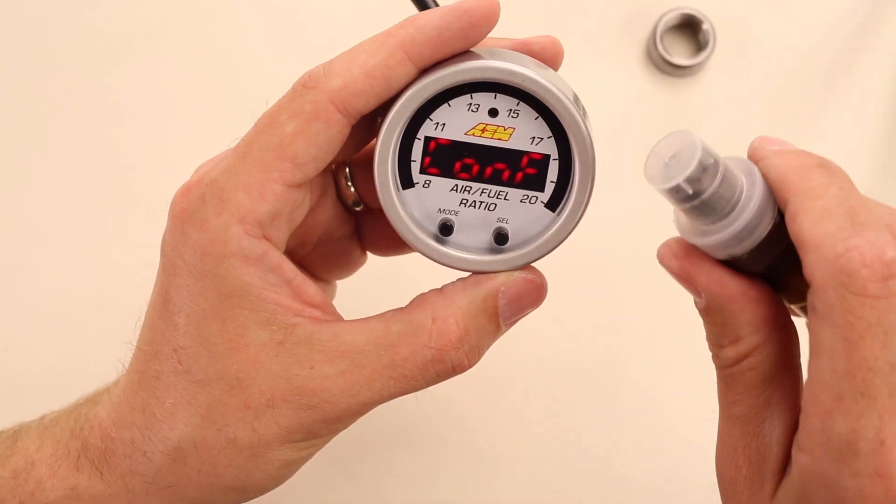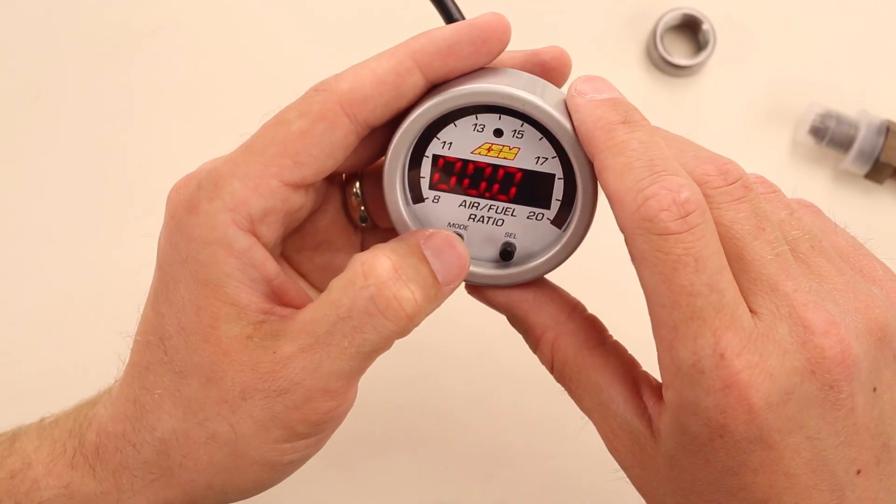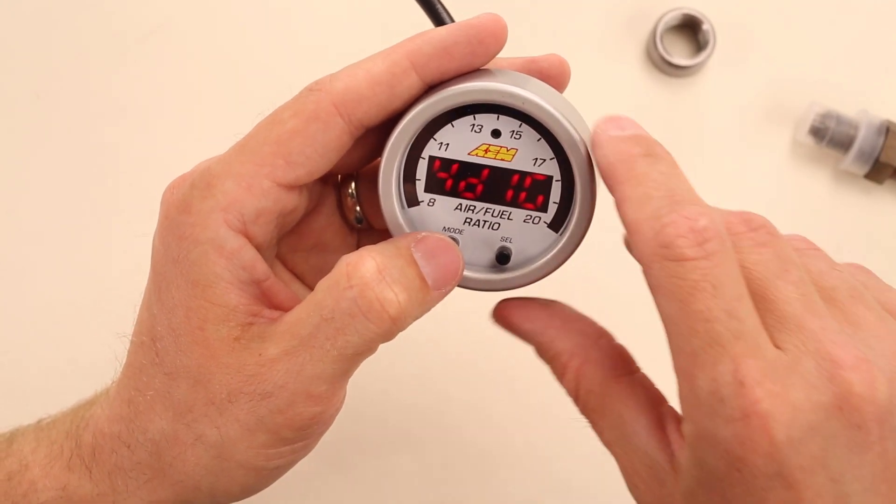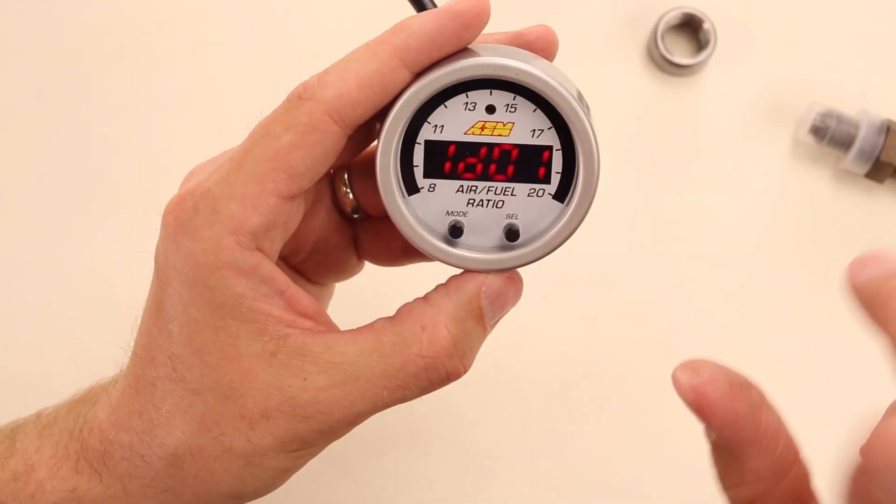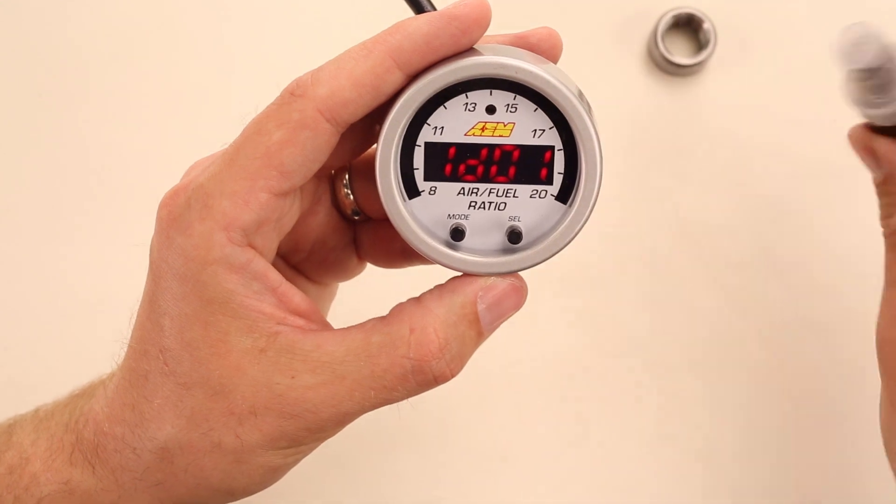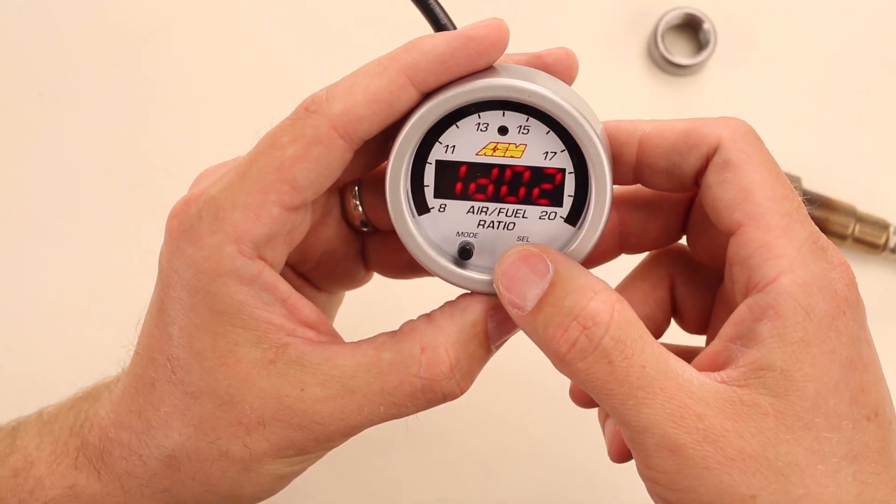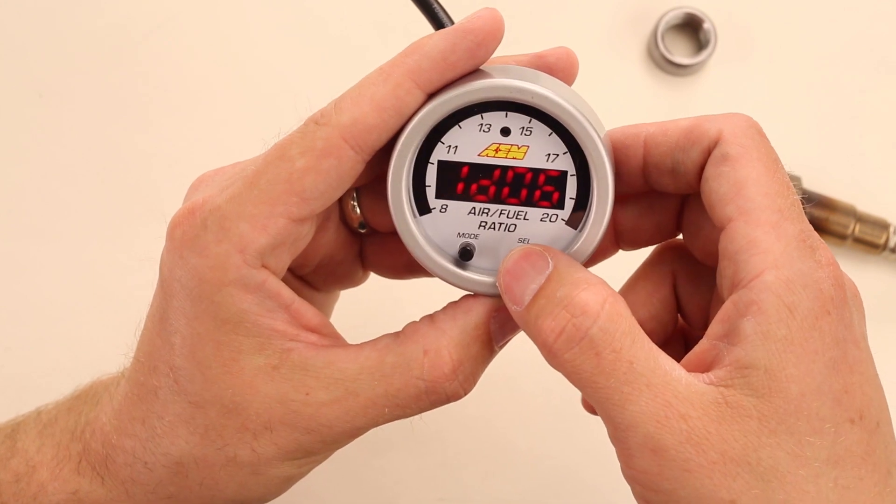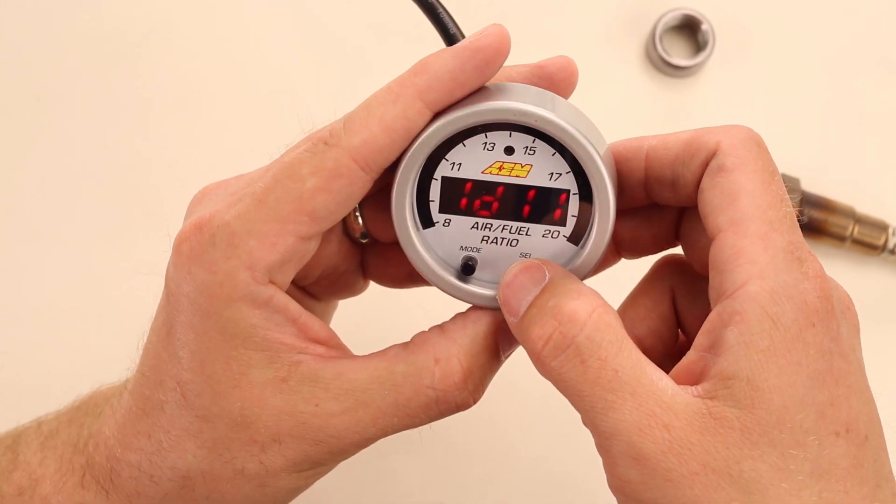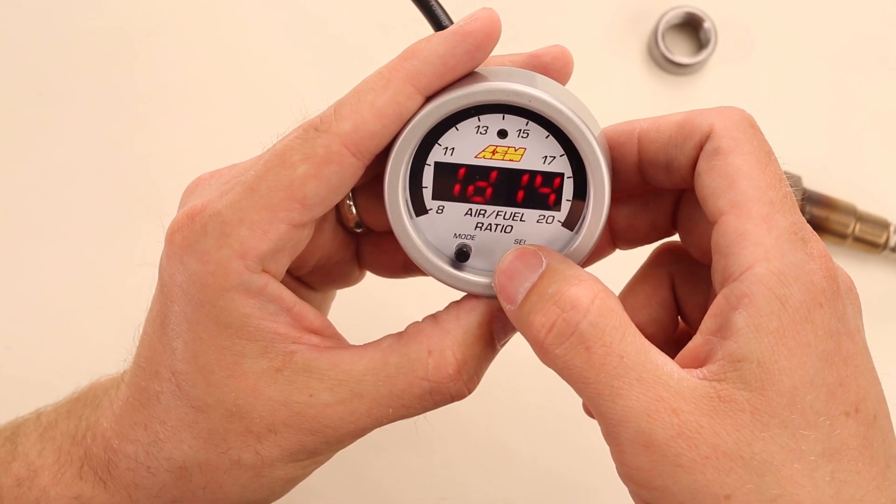Now there's one last function because this is a CAN enabled gauge. You can toggle through to the CAN mode and then you can assign this gauge or this sensor one of up to 16 positions on the CAN bus. So you decide which identity it's going to have and then you lock it in.